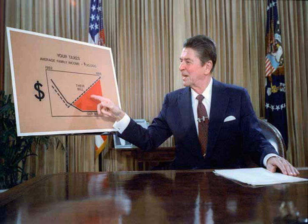Reagan lifted remaining domestic petroleum price and allocation controls on January 28, 1981, and lowered the oil windfall profits tax in August 1981. He ended the oil windfall profits tax in 1988. During the first year of Reagan's presidency, federal income tax rates were lowered significantly with the signing of the Economic Recovery Tax Act of 1981, which lowered the top marginal tax bracket from 70% to 50% and the lowest bracket from 14% to 11%.